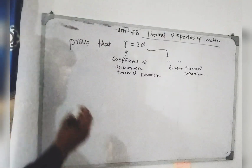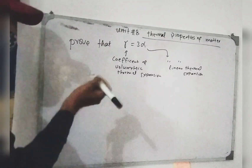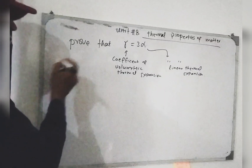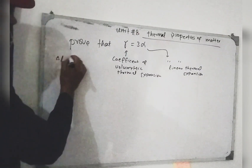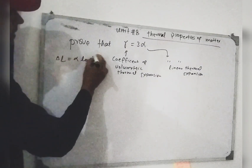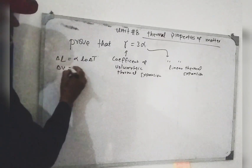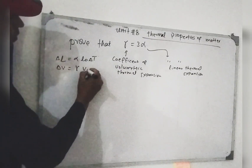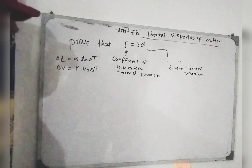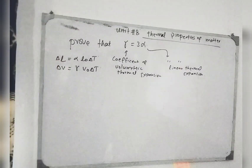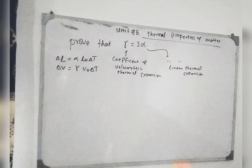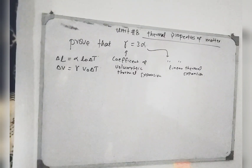We have two relations that we have already talked about. The linear thermal expansion: delta L is equal to alpha L0 delta T. And the volumetric thermal expansion: delta V is equal to gamma V0 delta T.